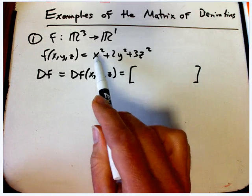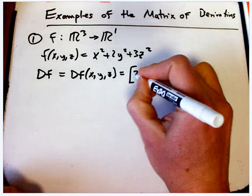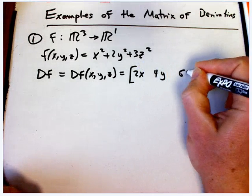That's just the derivatives with respect to x, y, and z. So it's going to be 2x, 4y, 6z.